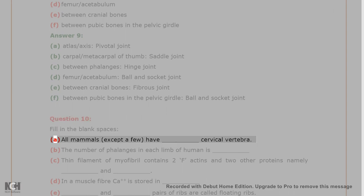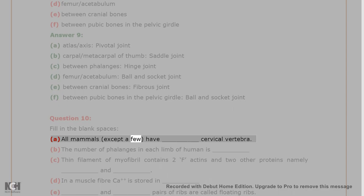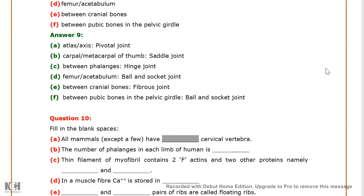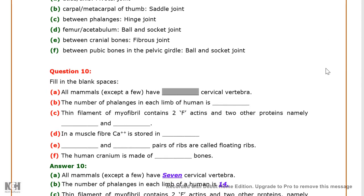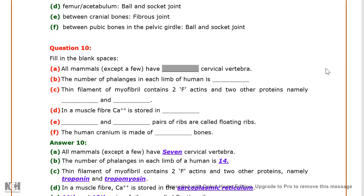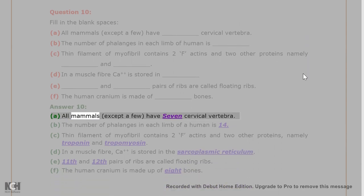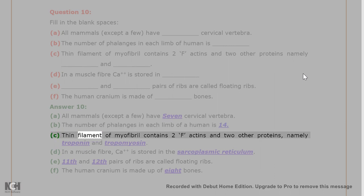Question 10. Fill in the blank spaces. A. All mammals, except a few, have seven cervical vertebra. B. The number of phalanges in each limb of a human is 14. C. Thin filament of myofibril contains two F-actins and two other proteins, namely troponin and tropomyosin.